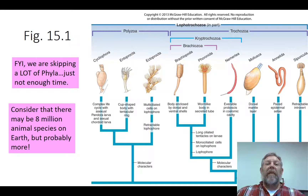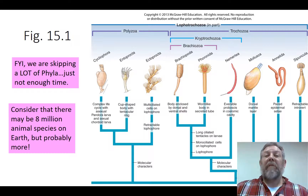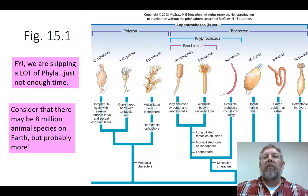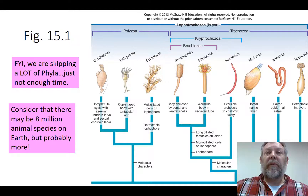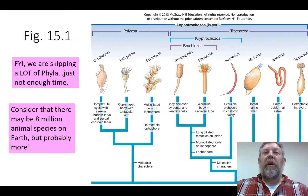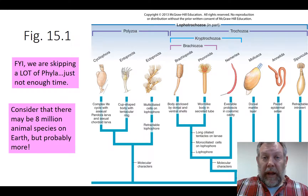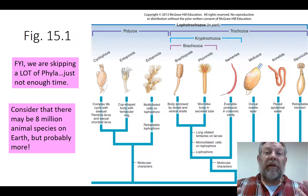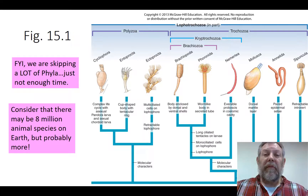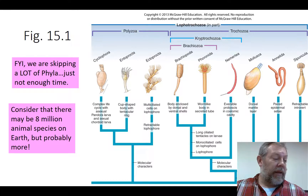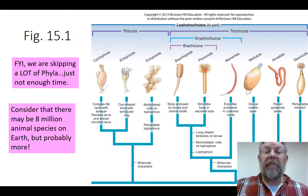There might be something like 8 million animal species on Earth, and we're just not going to be able to cover all of those. There are a lot of unique phyla that are interesting, but we just don't have time to cover them. I'm just trying to hit the more common phyla, especially the ones you're going to get here in Kentucky.